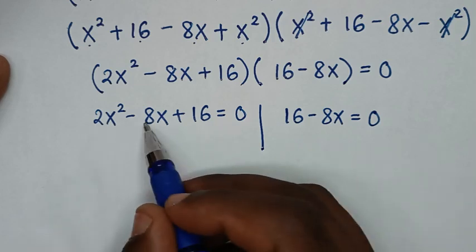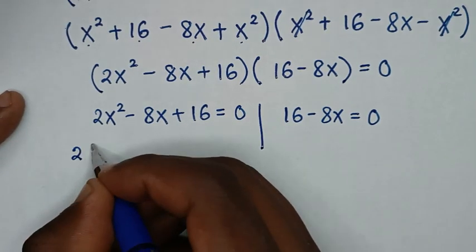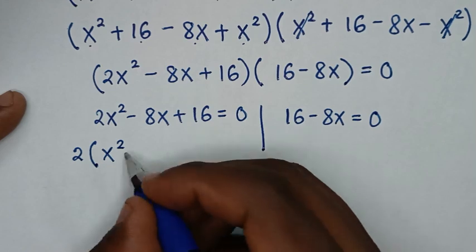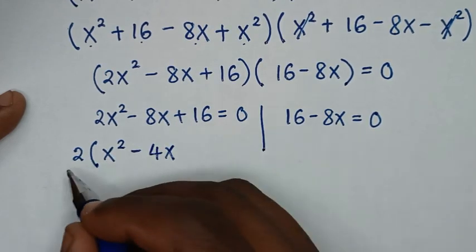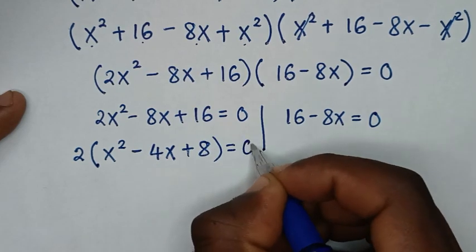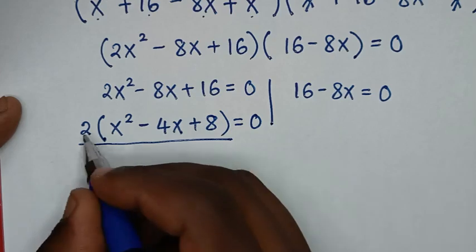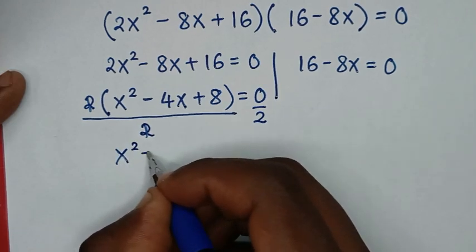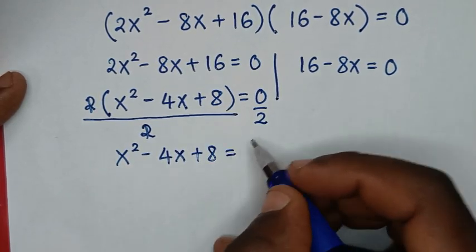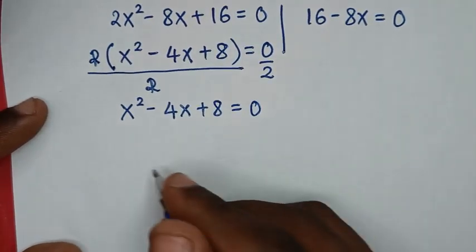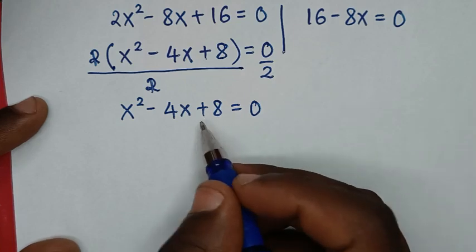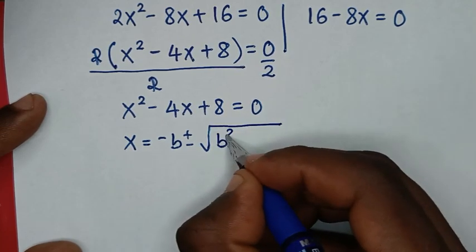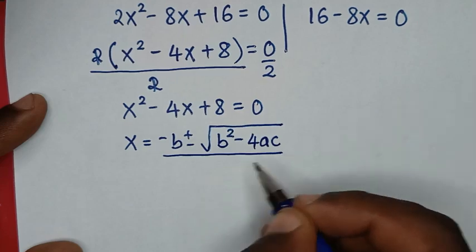From the first solution, 2 is a common factor. Factorizing out 2: 2(x squared minus 4x plus 8) equals 0. Dividing both sides by 2, we get x squared minus 4x plus 8 equals 0. From this quadratic equation, we'll use the quadratic formula: x equals negative b plus or minus square root of (b squared minus 4ac), over 2a.